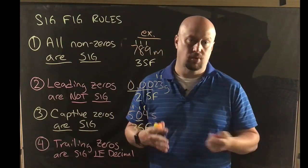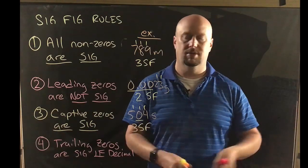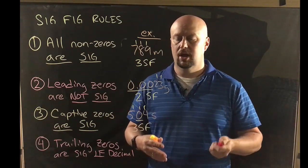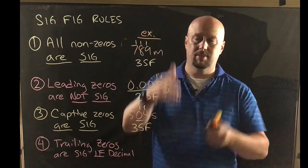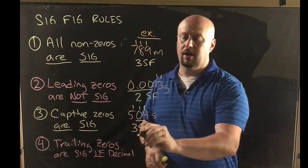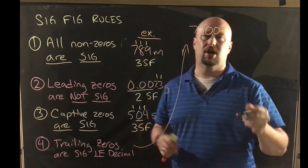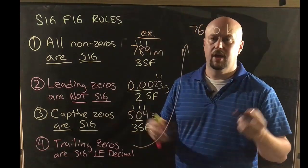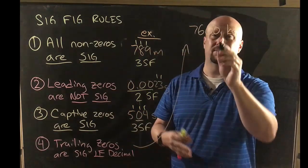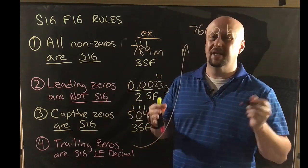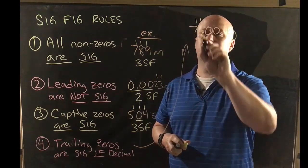The last major rule is trailing zeros — zeros at the end of a number. It all depends on whether or not there is a decimal point given in that number. So for example, if I had 7,600 kilograms with no decimal, those two trailing zeros are not significant. We'd say that number has two sig figs.